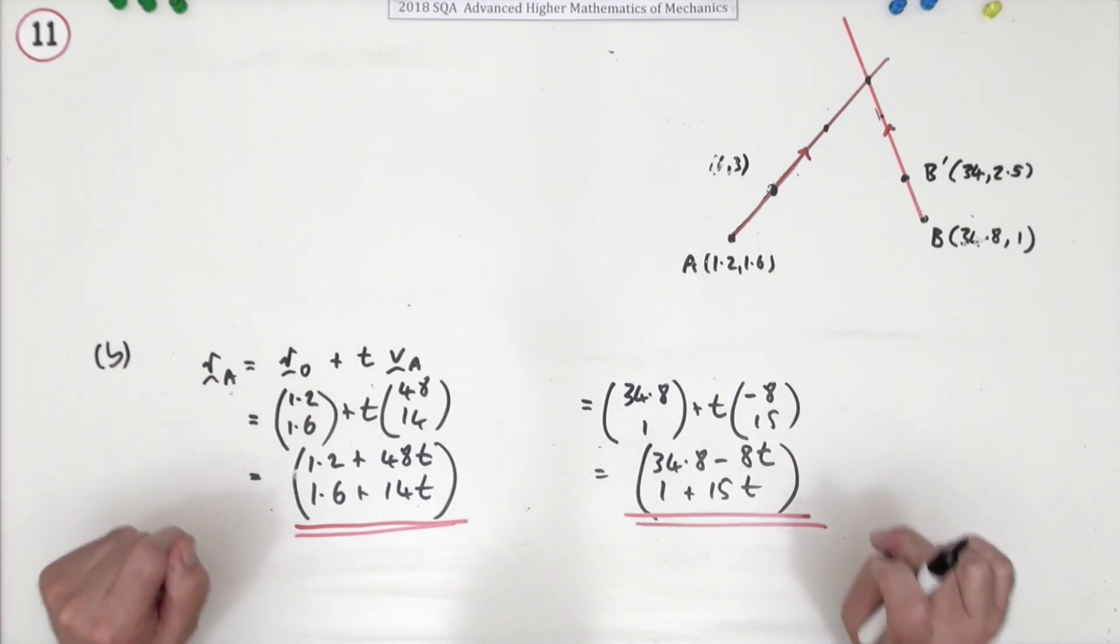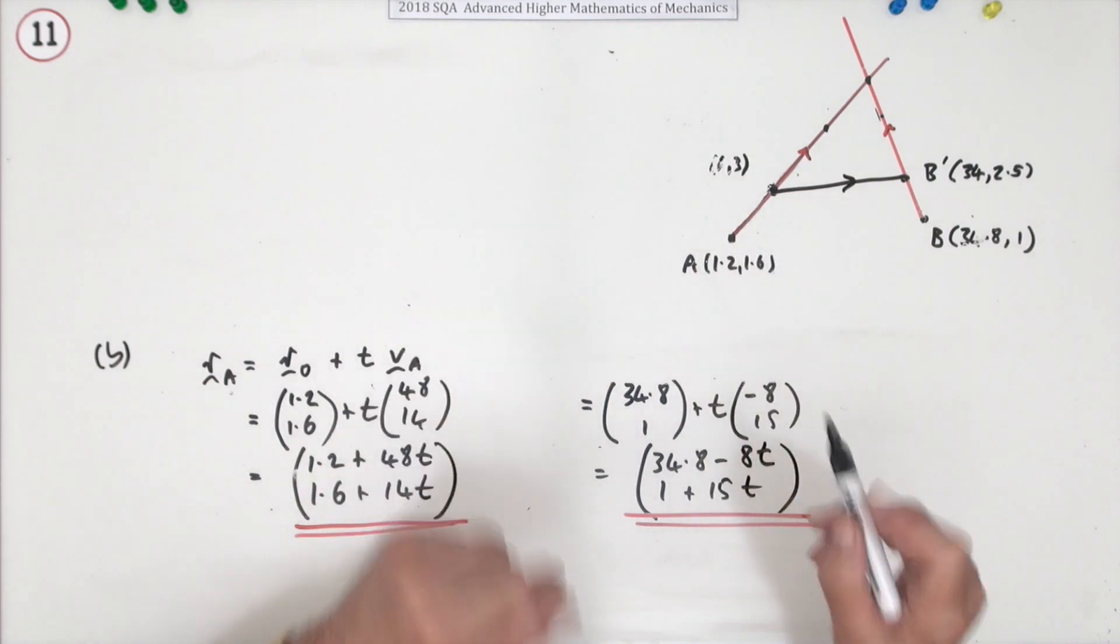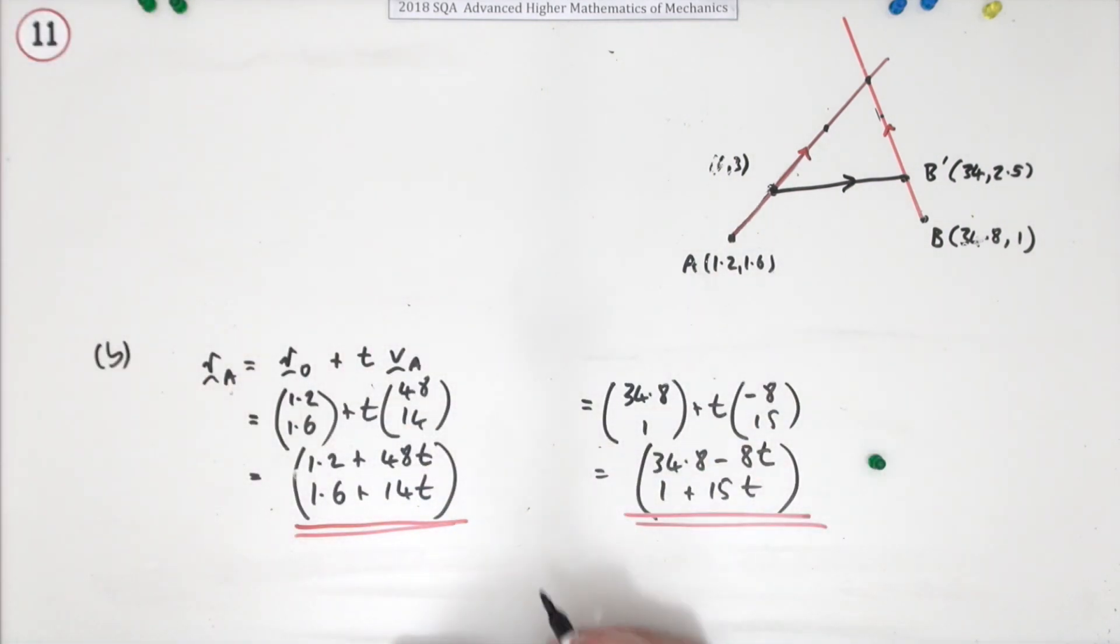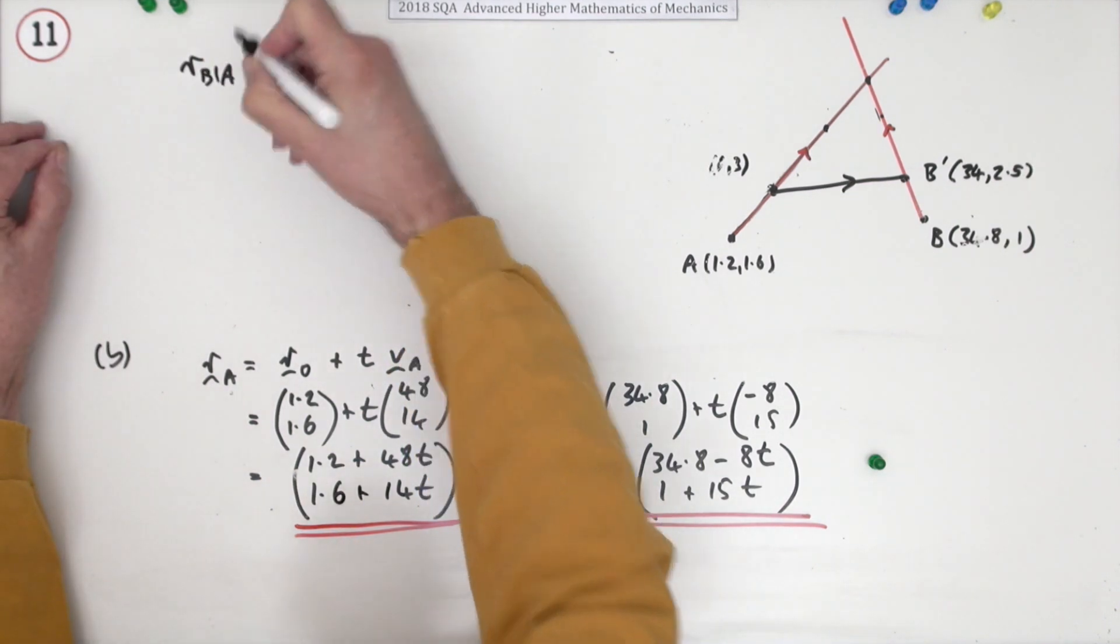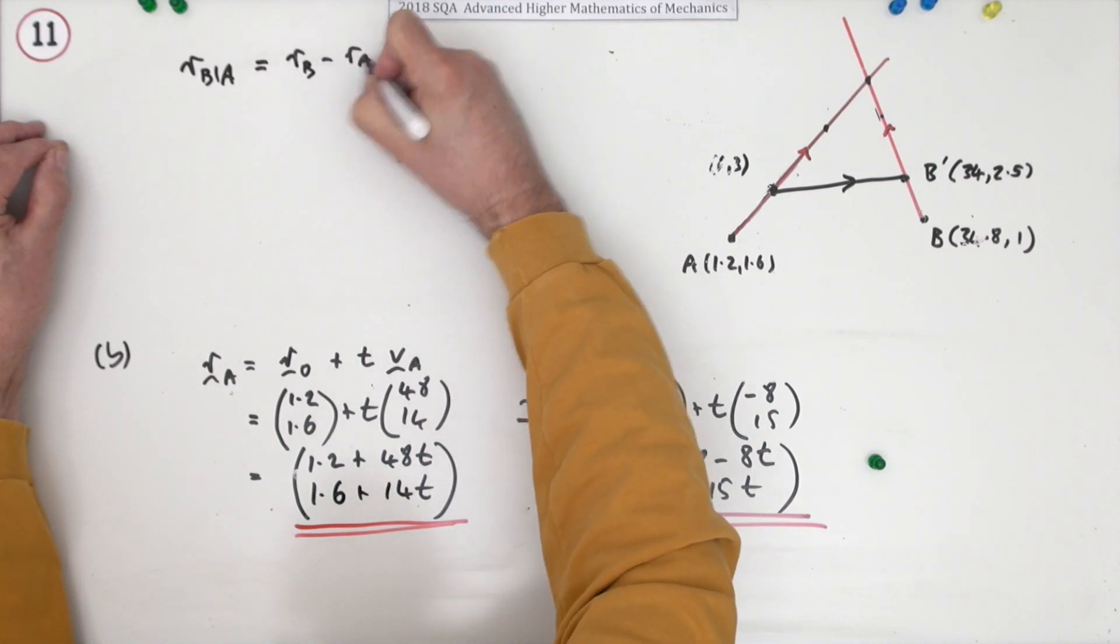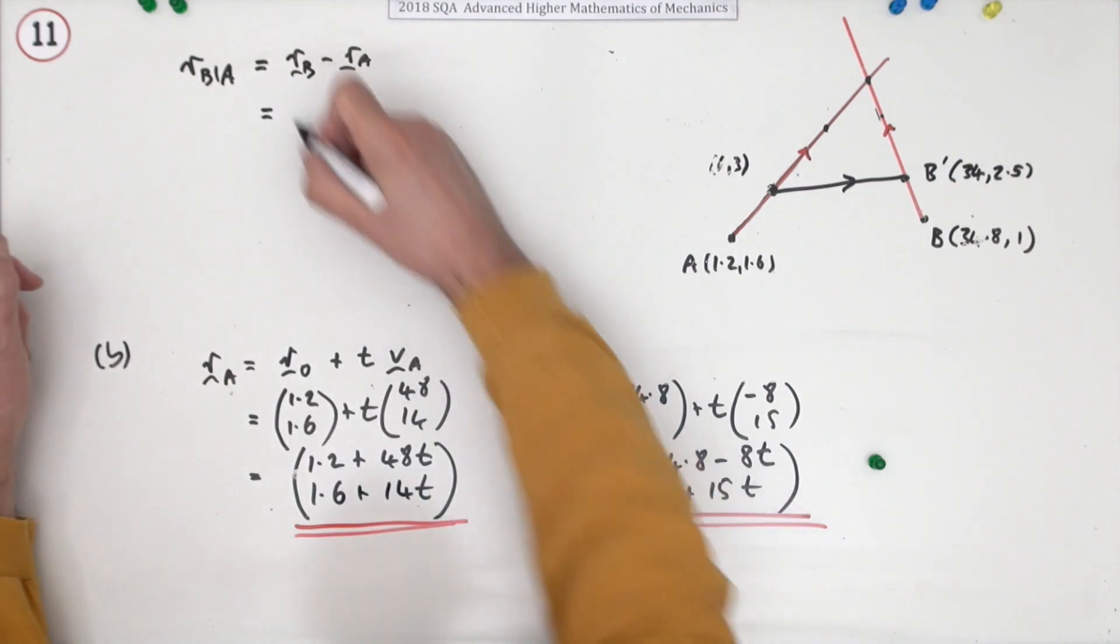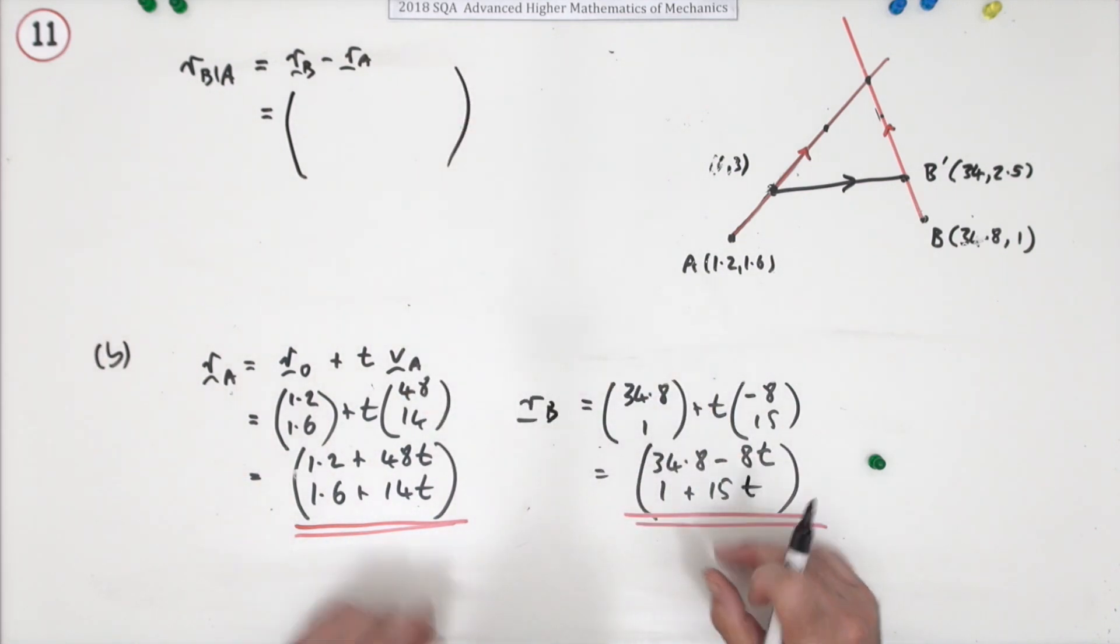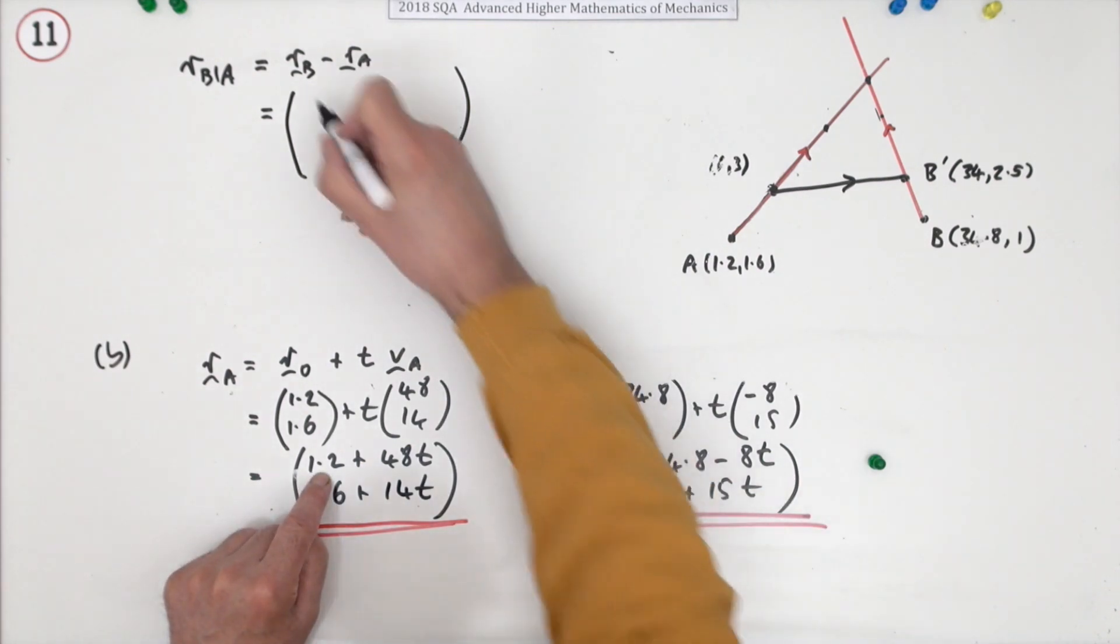Now there were a couple of alternatives to part b in order to show that they collided. One way would be to find the relative position of B compared to A, in other words to find this vector here, and then if that vector ever got to 0 you know they collide. So the first part would still have been to find these two, define r_A and r_B, and then you could have got the position of B relative to A would be r_B minus r_A. So just subtracting them the way they are here, then that would give this vector.